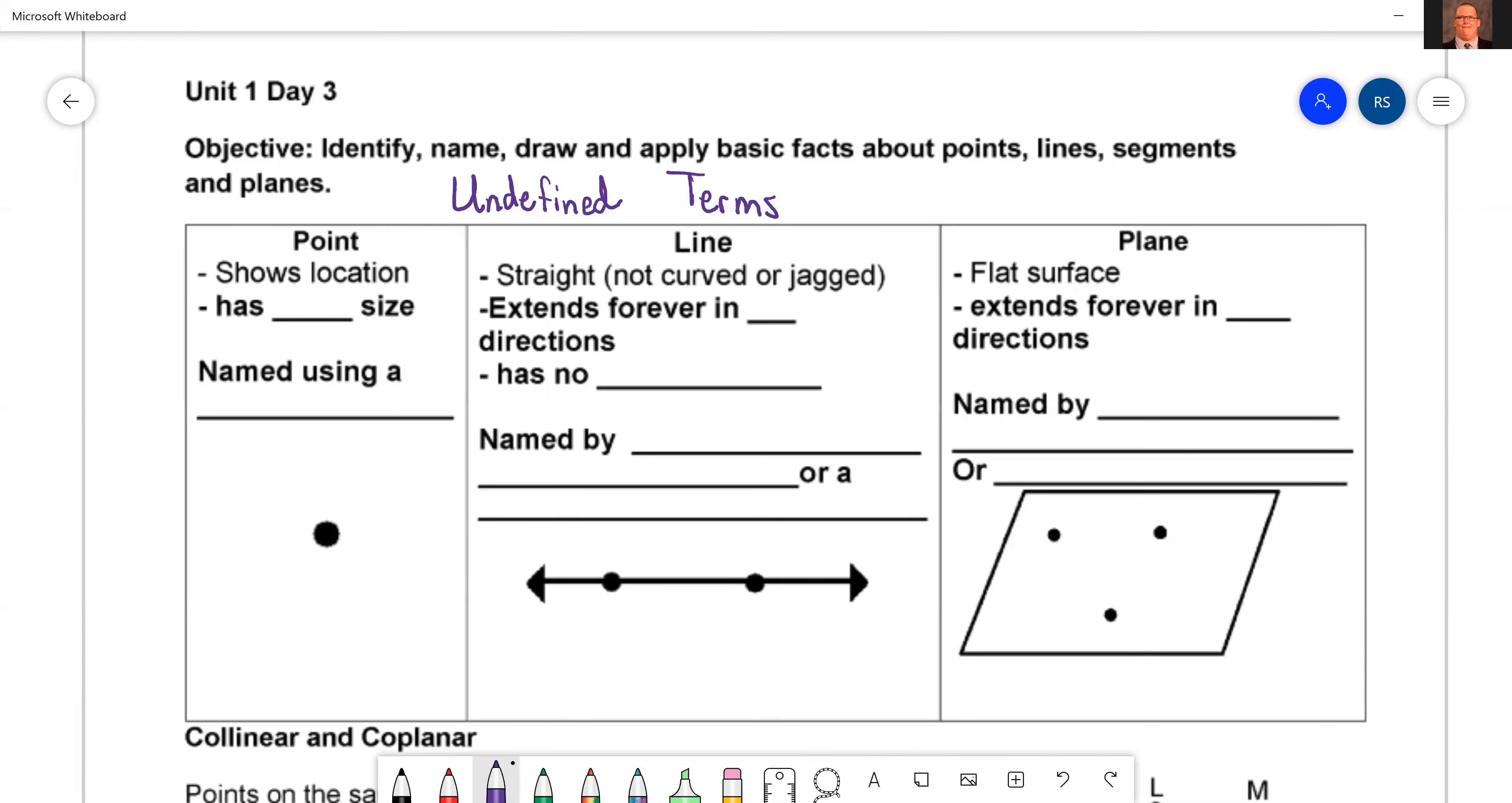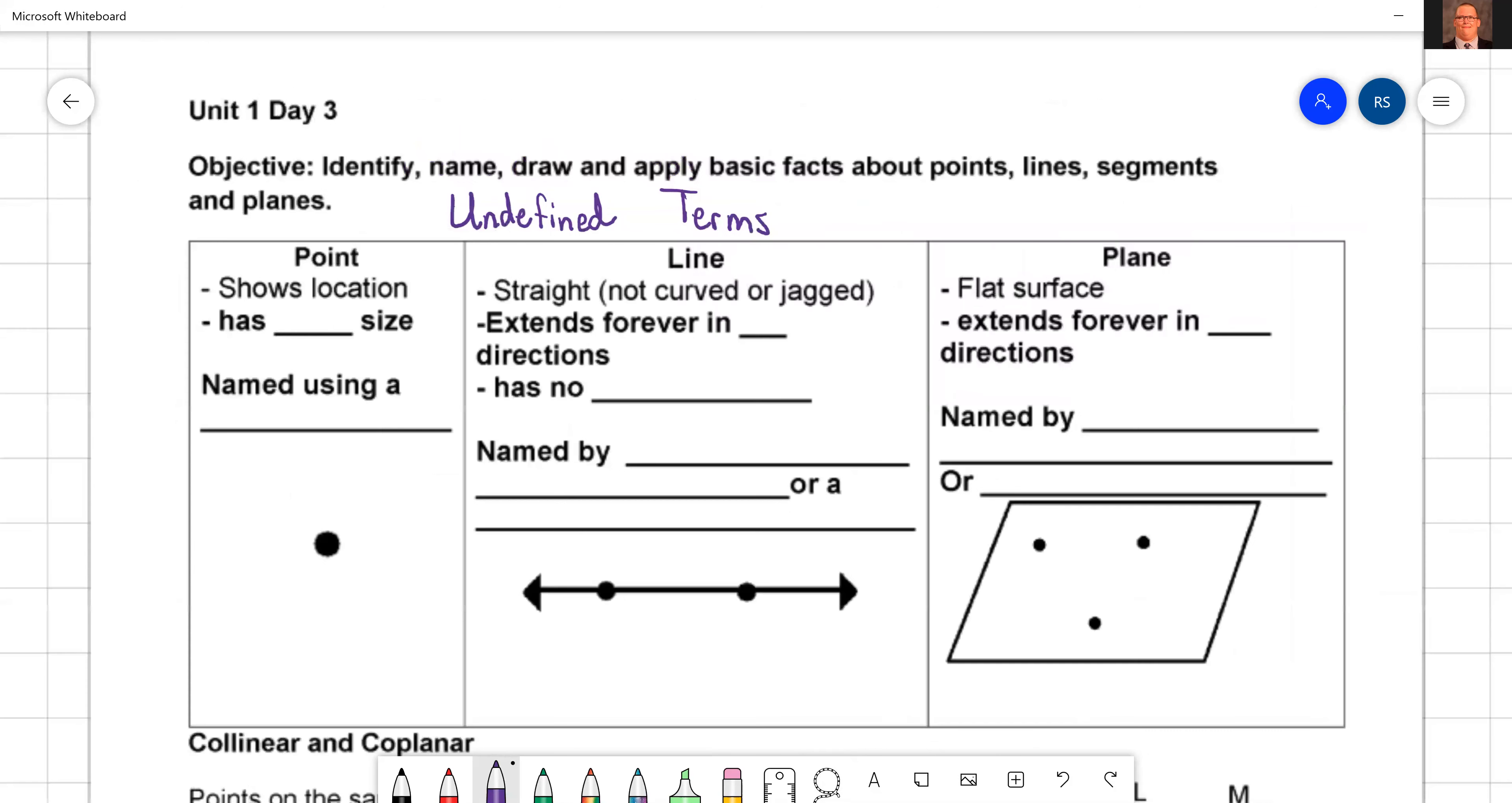So let's just go through them in order. First we have a point. If you look at a map and find a point on the map, what does that point tell you? The location of the town, maybe some interesting stop or something. It shows a location. Now on a map, we may have an idea of how big or small the town is, but for a point itself, a point has no size whatsoever.